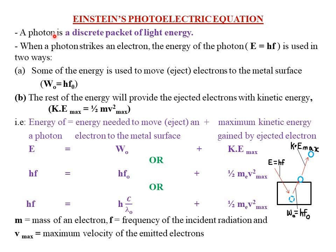Let's start by defining what we mean by a photon. A photon is simply a discrete packet of light energy. The word discrete simply means countable, so we can count packets of light energy. The Einstein's photoelectric equation can be derived from the relation whereby incident light strikes a given metal in order for it to emit some electrons.